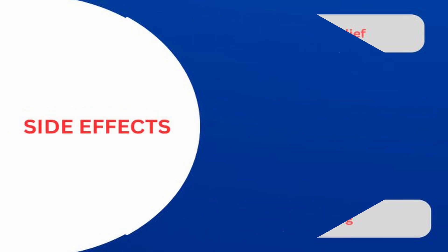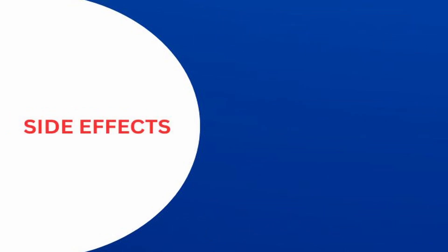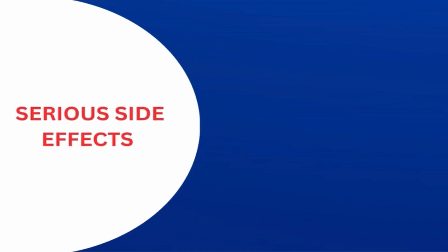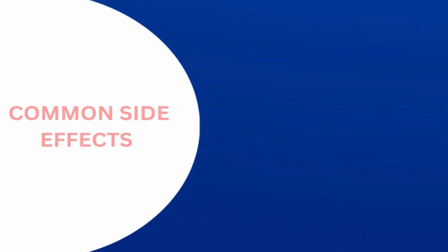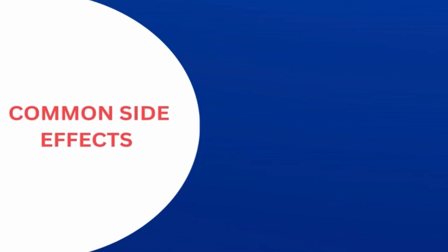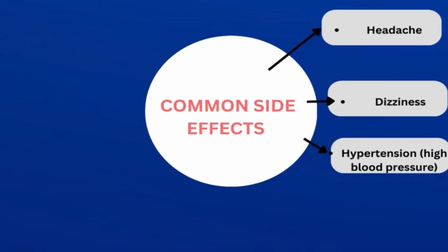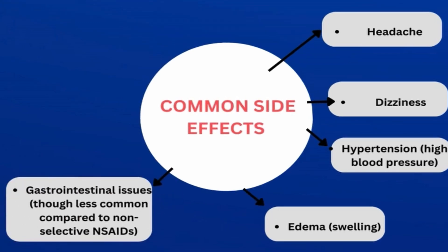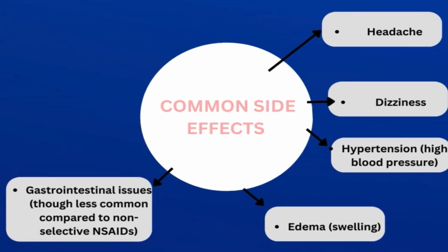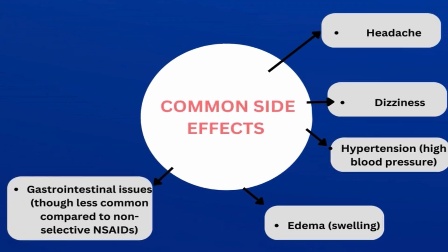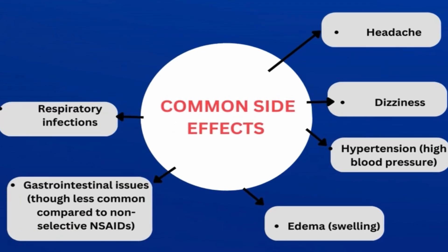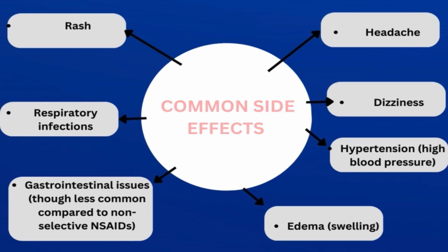For side effects, I've listed common side effects and more serious side effects. The common side effects that generally require no medical attention include headache, dizziness, hypertension (high blood pressure), edema (swelling), gastrointestinal issues — though these are less common due to the selective nature of etoricoxib — respiratory infections, and rashes. Most of these common side effects will fade away as you continue using the medication.